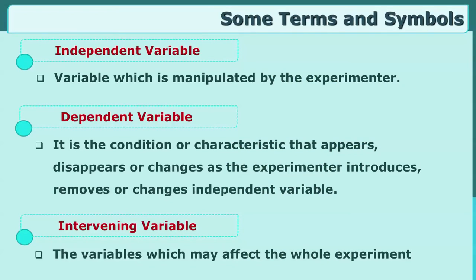The independent variable is the treatment. It does not change, but it has an impact on another variable known as the dependent variable. The dependent variable changes — it increases, decreases, or changes as per the change in the independent variable. If you change the intensity of the independent variable, it may have an effect on the dependent variable.